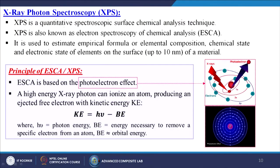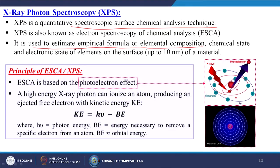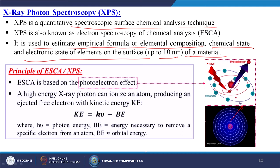Next is X-ray photoelectron spectroscopy, or XPS. XPS is a quantitative spectroscopic surface chemical analysis technique, also known as Electron Spectroscopy for Chemical Analysis, or ESCA. It is used to estimate the empirical formula, elemental composition, chemical state, and electronic state of elements on the surface up to 10 nanometers of a material. ESCA is based on the photoelectron effect, where X-rays fall on the orbitals and a photoelectron is removed.